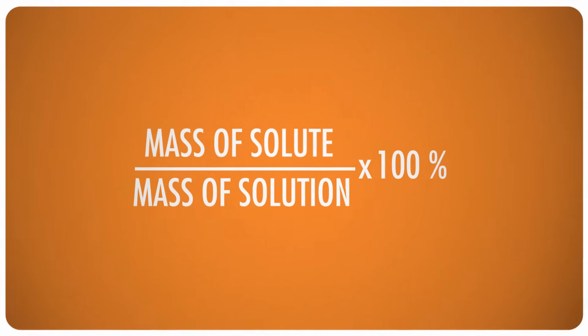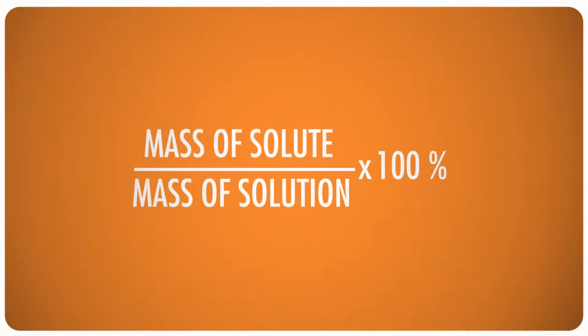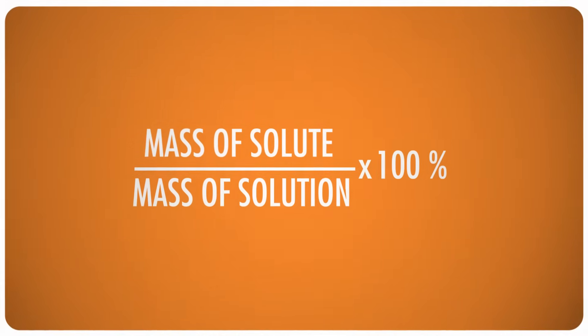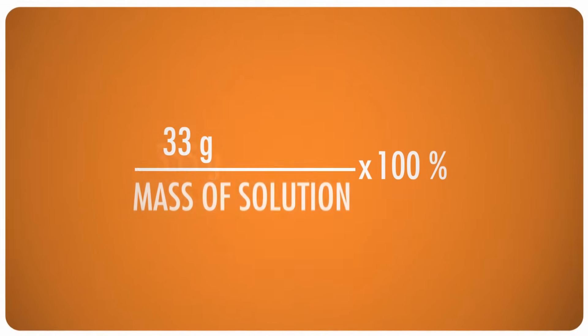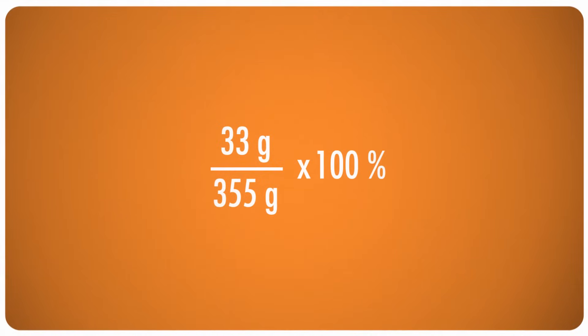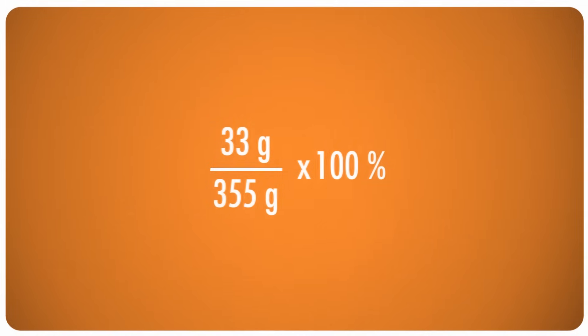So, in a can of your average soft drink, there's about 33 grams of sugar, and a total mass of 355 grams. Divide the mass of the solute by the mass of the whole thing, times 100, and the mass percent of the sugar in solution is 9.2 percent. Easy peasy there, but the more interesting question here is why?